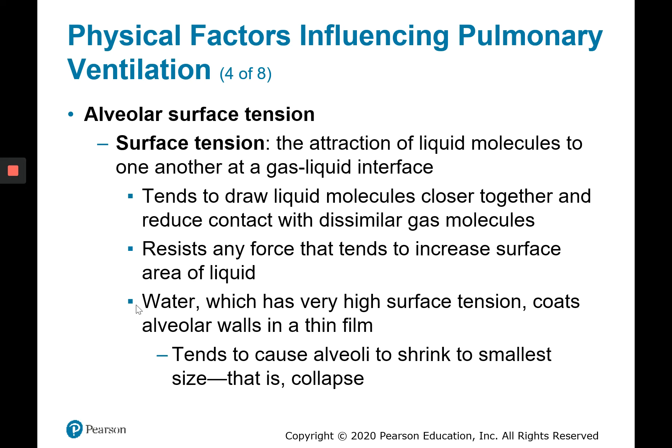Another physical factor influencing pulmonary ventilation is alveolar surface tension. Surface tension is the attraction of liquid molecules to one another at a gas-liquid interface. Inside each alveolus there's a thin coat of fluid with a high water concentration. The fluid on one side of the airspace and the fluid on the other side are attracted to each other because they're made up mostly of water molecules, which have high adhesive and cohesive properties. This makes the alveolus want to collapse.